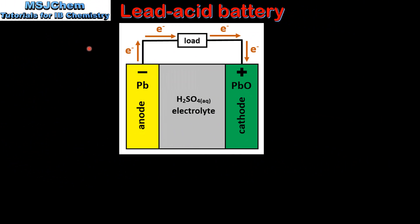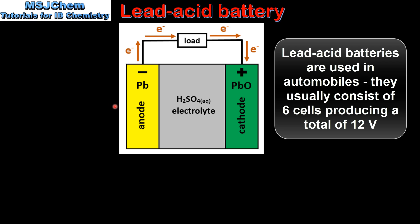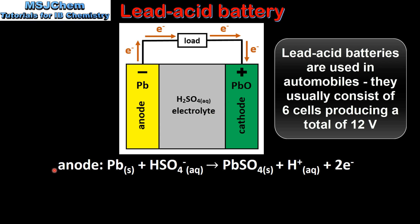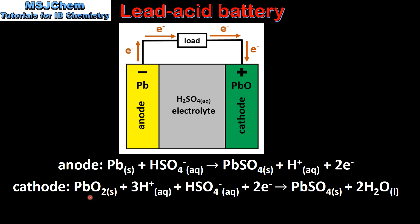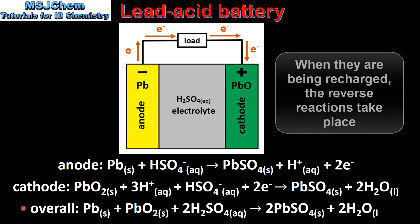We'll start by looking at a lead acid battery. In a lead acid battery the anode is lead, the cathode is lead oxide, and the electrolyte is sulfuric acid. Lead is oxidized to form lead sulfate. At the cathode, lead oxide is reduced to also form lead sulfate. The sulfuric acid is used up in the reaction. When the battery is recharged, the reverse reactions take place.